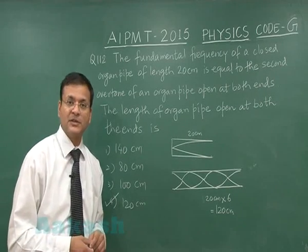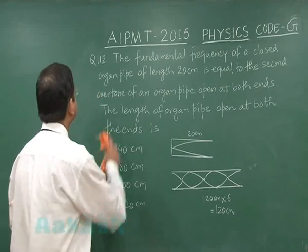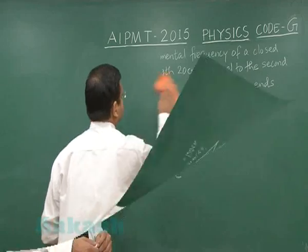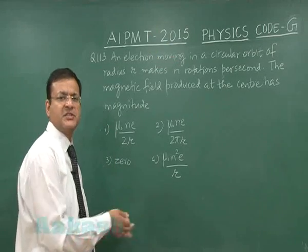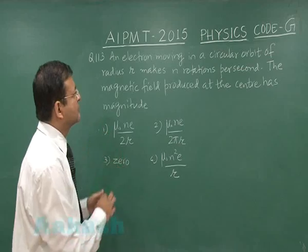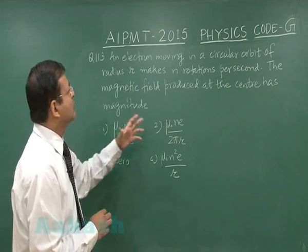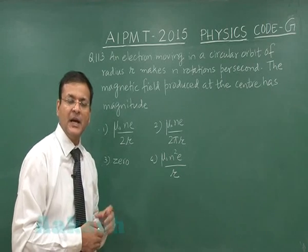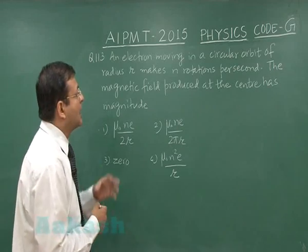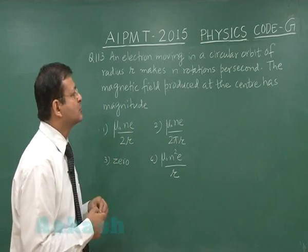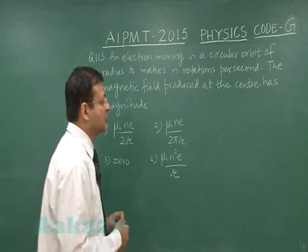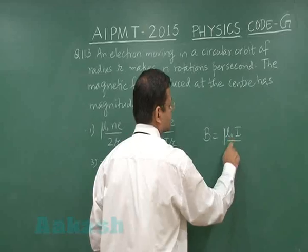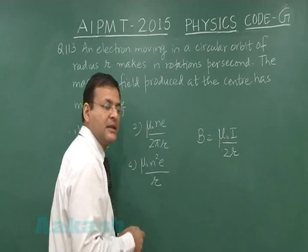Question 113 is a very straightforward direct question based on formula. It says that an electron moving in a circular orbit of radius r makes n rotations per second. This electron behaves like an equivalent current loop, and you have to find the magnetic field produced at the center of that loop. The standard expression for magnetic field at the center is mu-naught i by 2r.